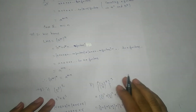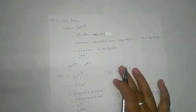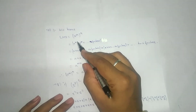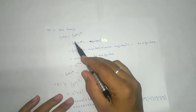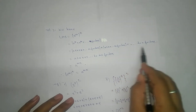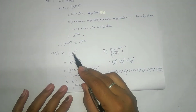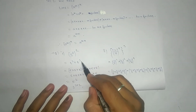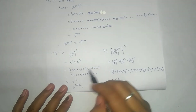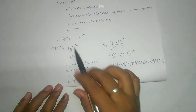Next, the third law: power of a power gives multiplication. So a to the power m, to the power n, means a to the power m repeated n number of times. Writing out a to the power m, n number of times, we can expand each a to the power m. Looking at the example: 5 to the power 3 to the power 2 means 5 to the power 3 multiplied by 5 to the power 3, and each 5 to the power 3 expands to three fives.